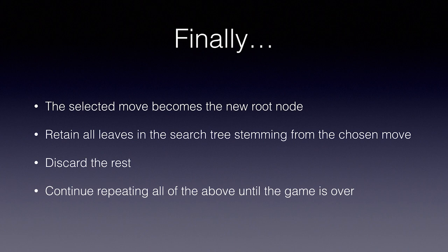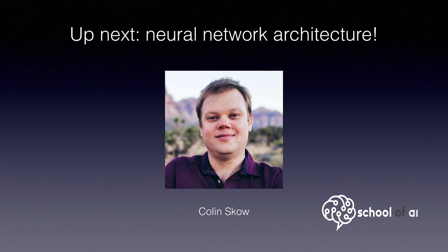That's all there is to Monte Carlo Tree Search. You should now understand enough about the algorithm to implement it in code yourself. Stay tuned for AlphaGo Zero Part 3, where we will take an in-depth look into the actual neural network architecture used in production by AlphaZero to master the games of Go, chess, and shogi at superhuman levels. This is Colin Scow and I'll see you back very soon.